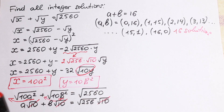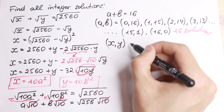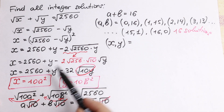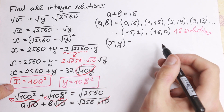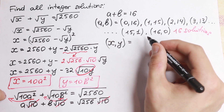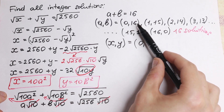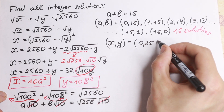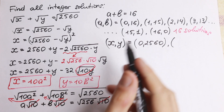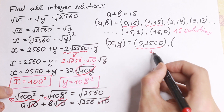We are interested not in a and b but in x and y, so we go back to our substitution: x equals 10a² and y equals 10b². For the first pair (a=0, b=16): x equals 0 and y equals 16² times 10 equals 256 times 10 equals 2560. So the first solution pair is (0, 2560).